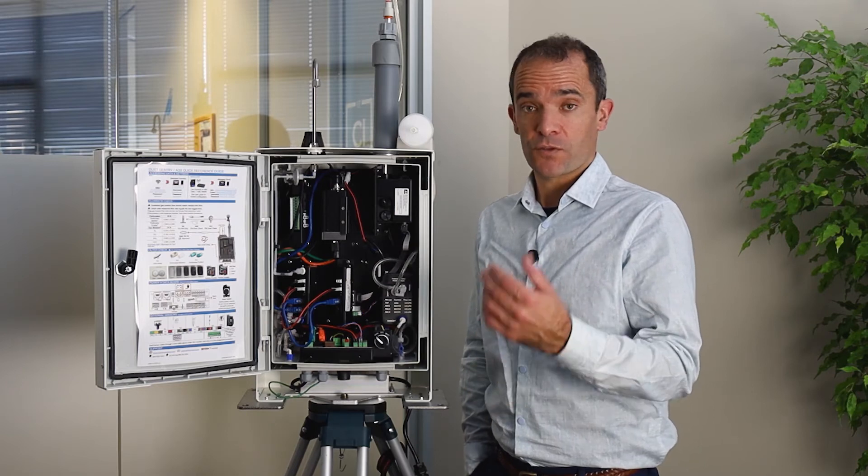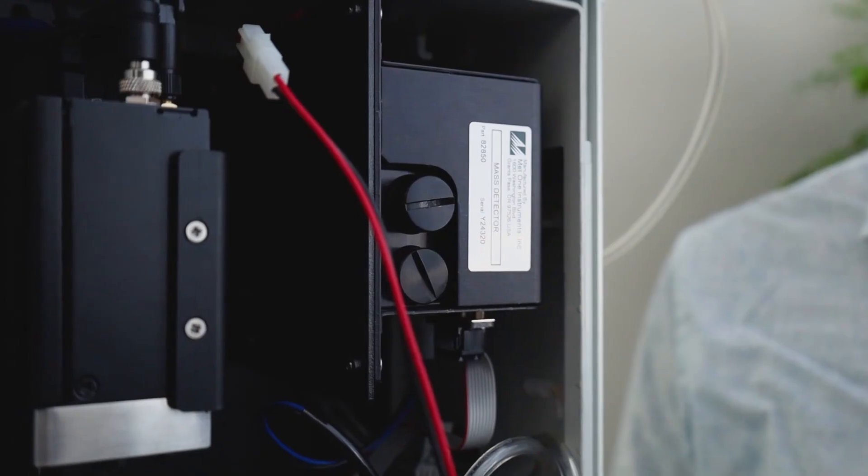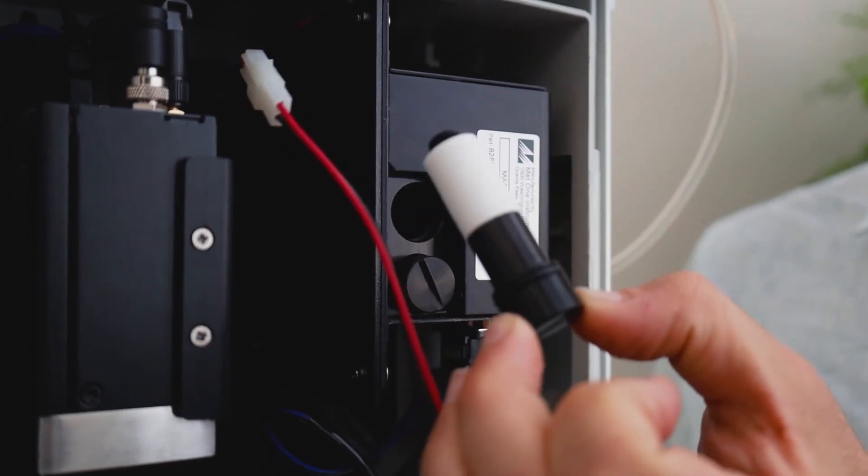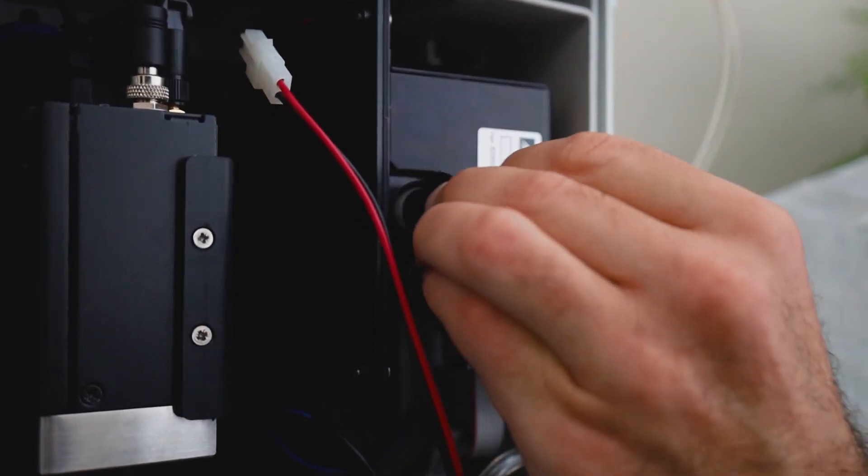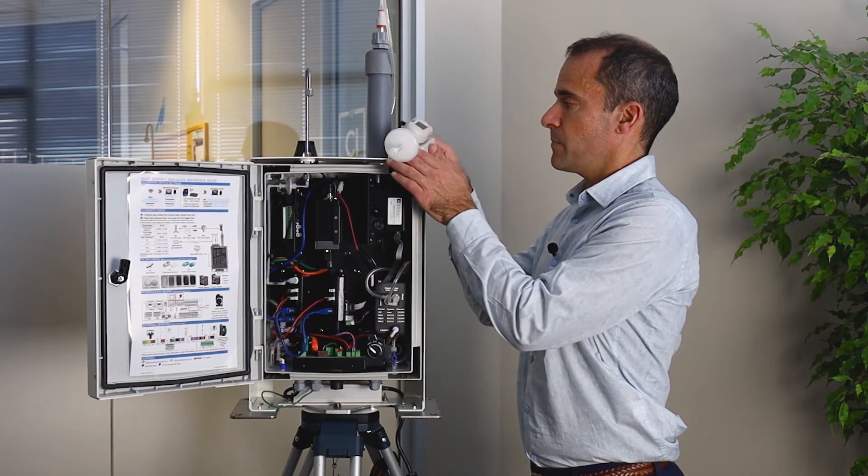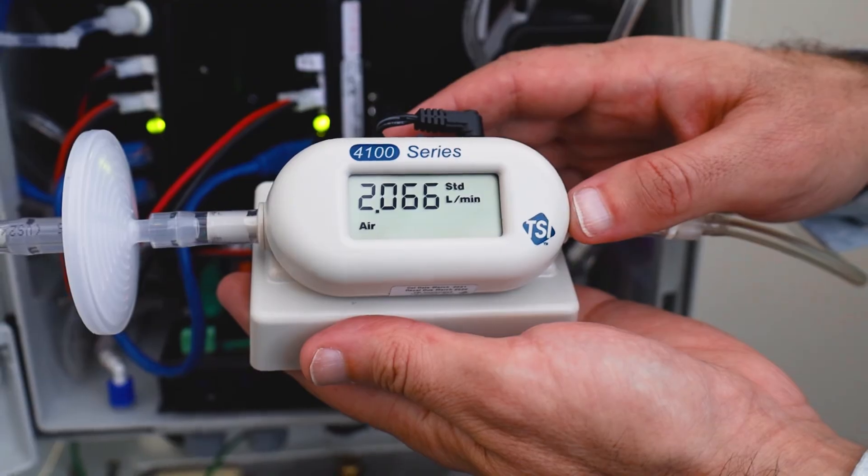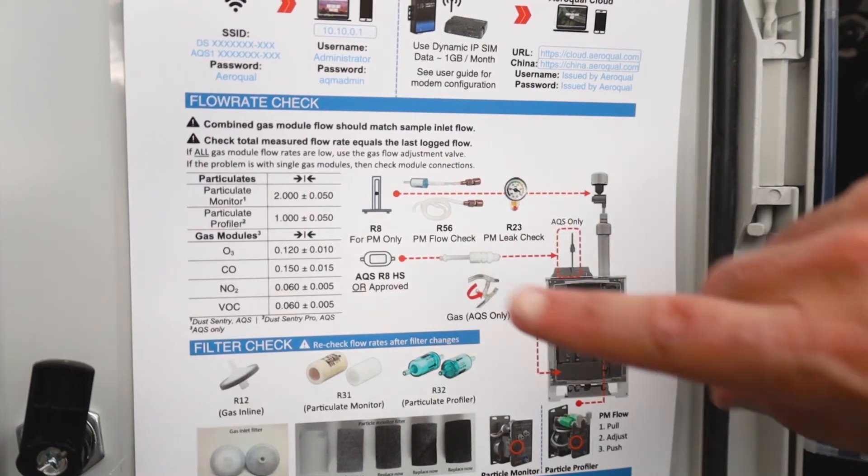After you've changed the engine, it's really important to make sure that you've got clean filters, whether it's the particle engine or the particle profiler. The next step is to set the flow rate appropriate for your engine. You'll be using the flow meter for this. The appropriate flow rate is given to you on the door sticker.